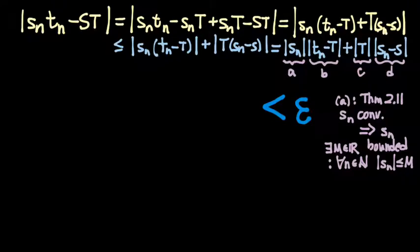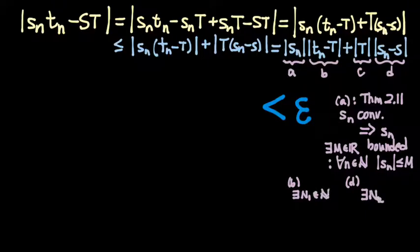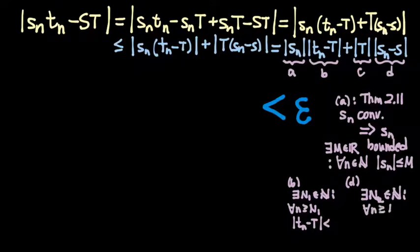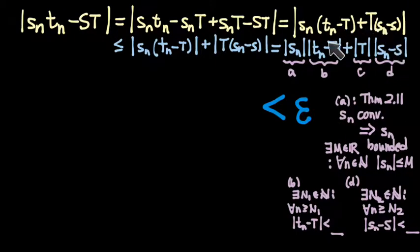For quantities B and D we appeal to the definition of convergence, which gives a bound on the tail of the sequence. There exist N1 and N2 such that for all N greater than or equal to N1, absolute value of TN minus T is less than whatever we'd like, and for all N greater than or equal to N2, absolute value of Sn minus S is less than whatever we'd like. Our question is: what do we want to put in those blanks to make the whole sum less than epsilon?